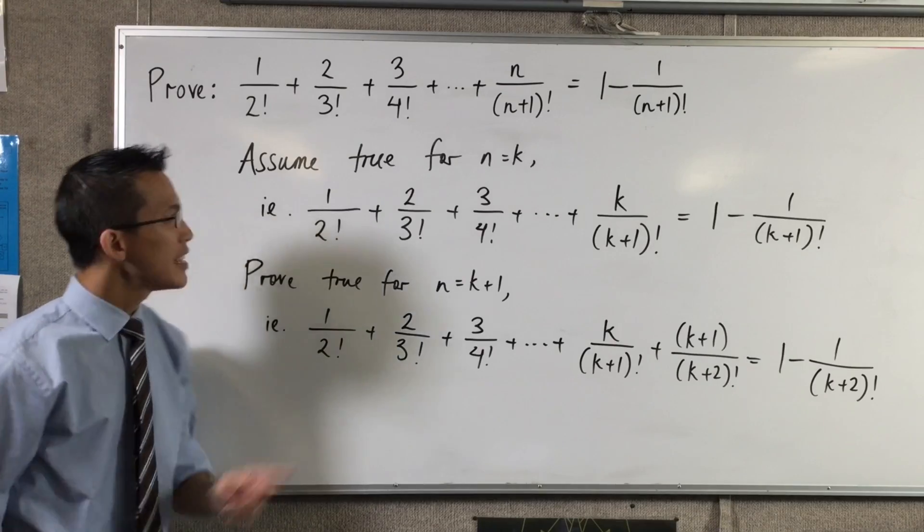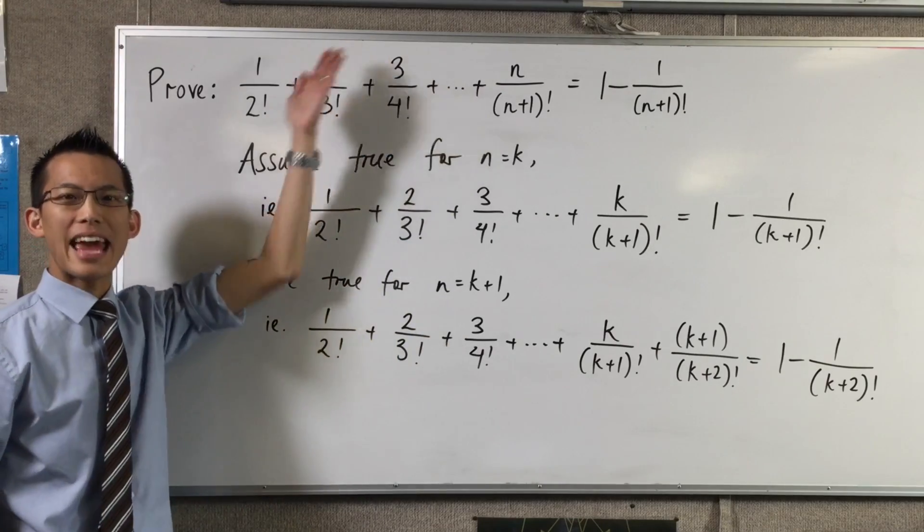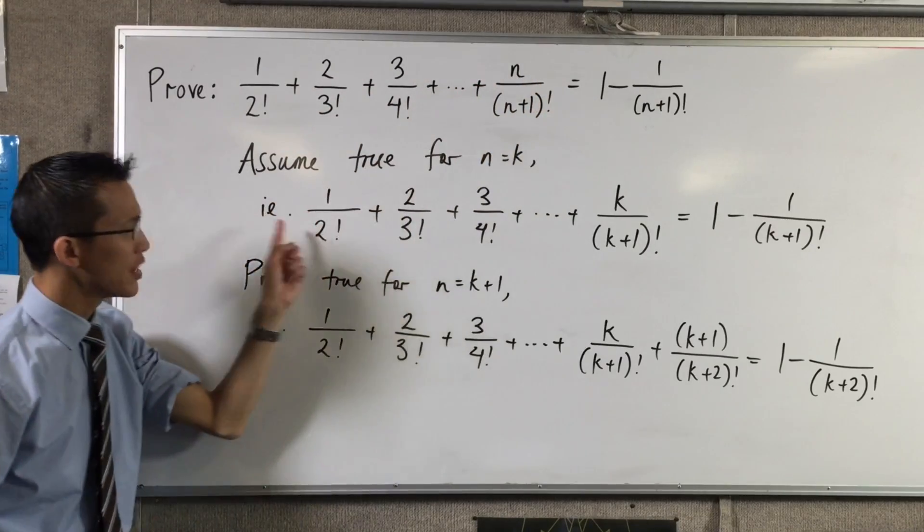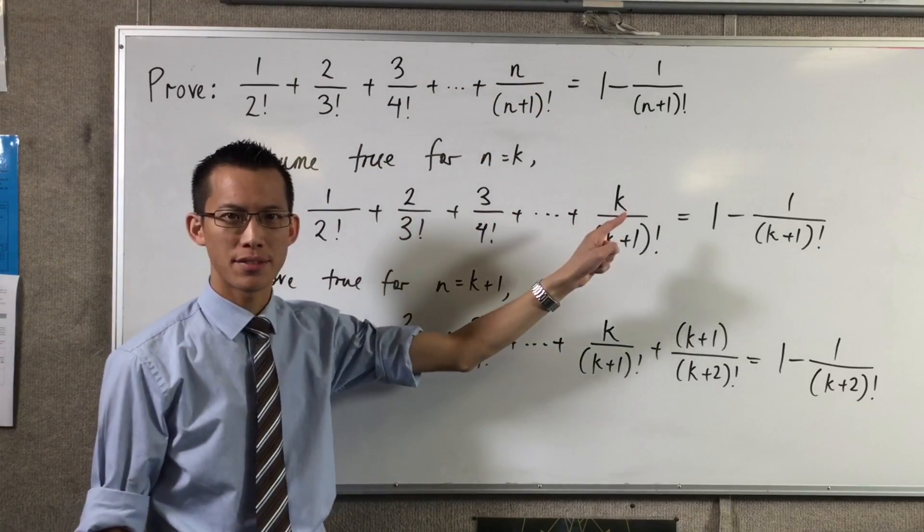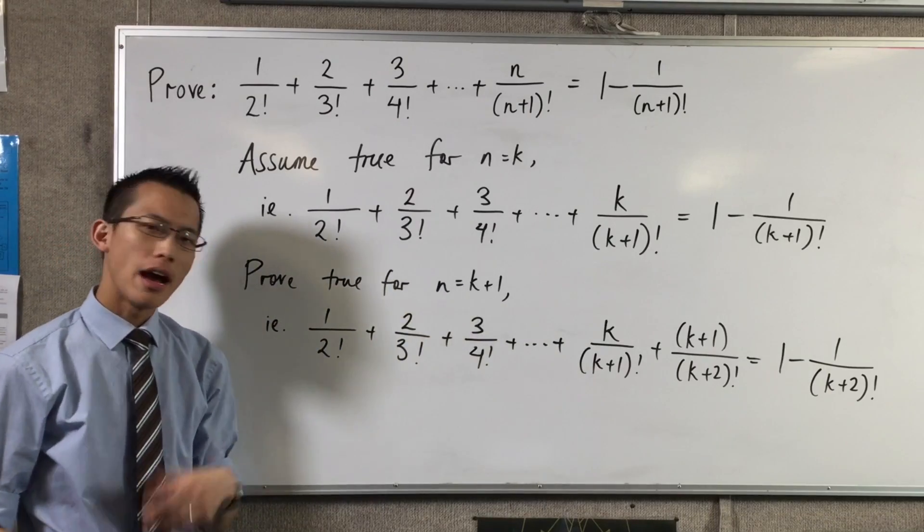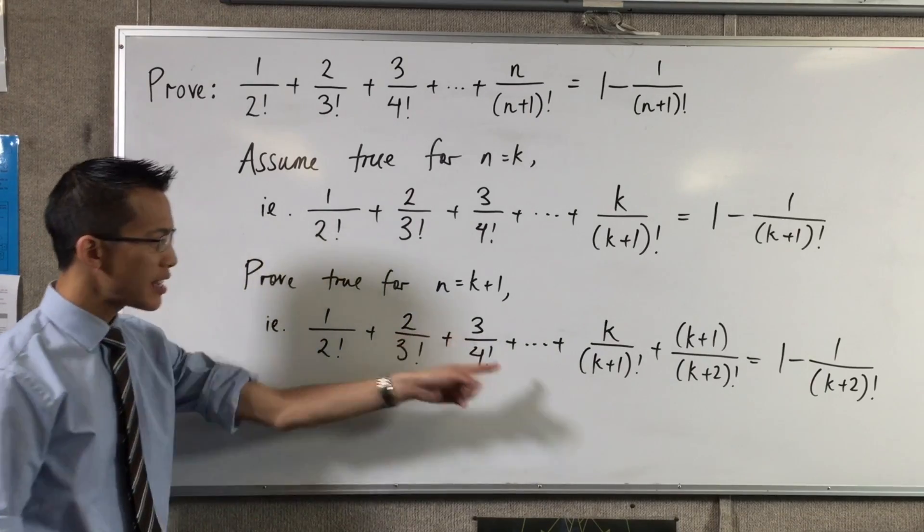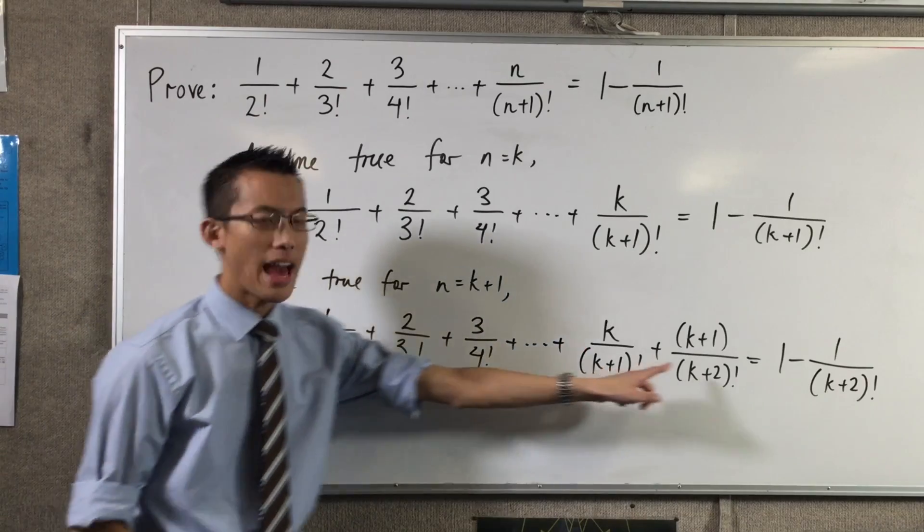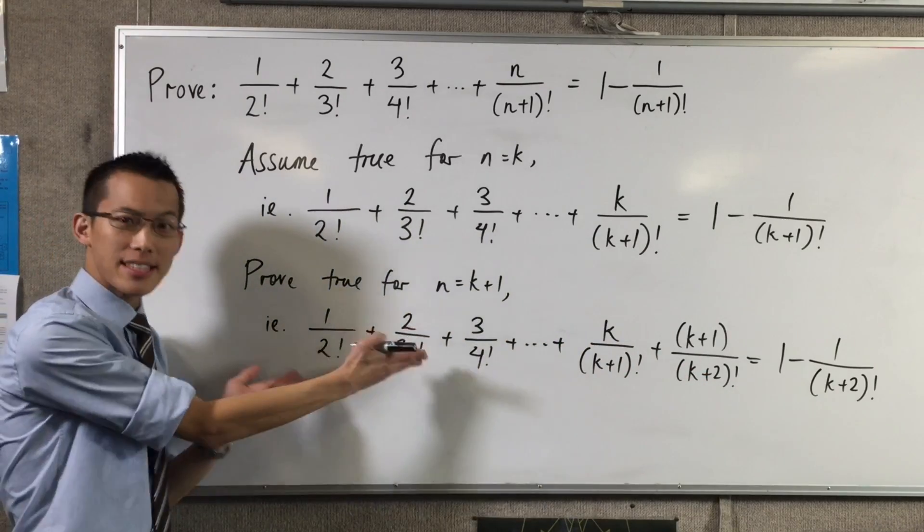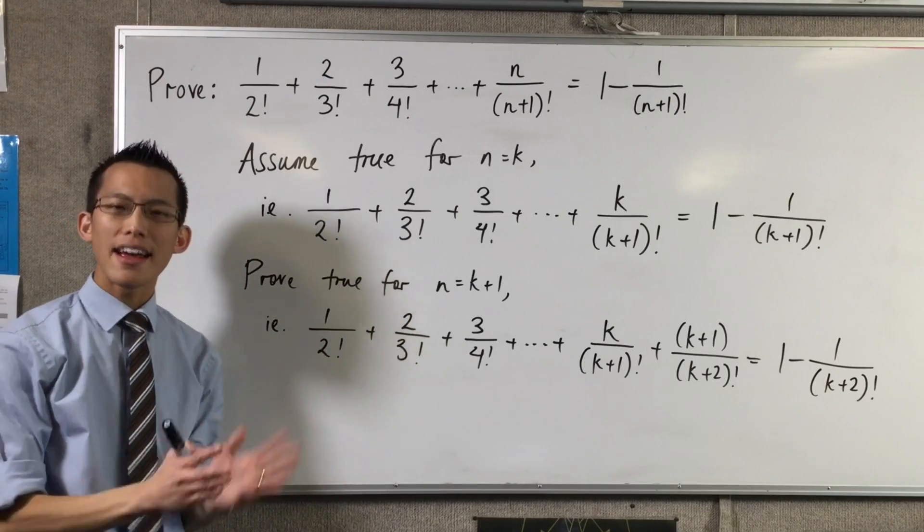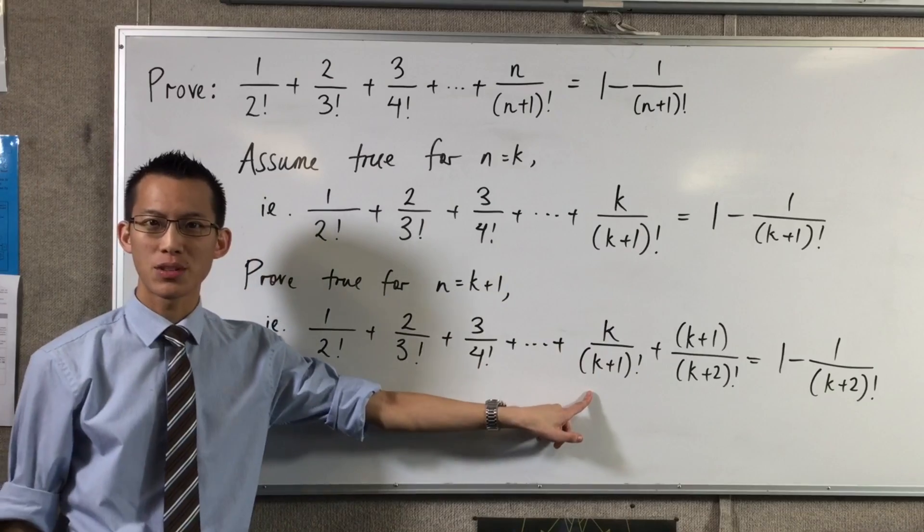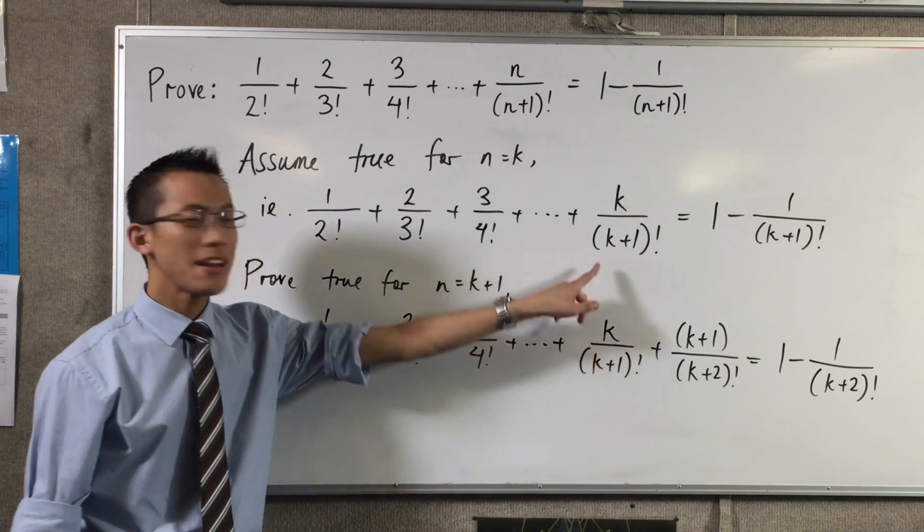Now, something worth noticing is that the original statement has n terms on the left, 1, 2, 3, 4, 5, 6, 7, 8 up to n. The assumption has k terms on the left, and the statement I'm now working with has k plus 1 statements on the left. I can't write all of them out, but you can see I've included the second last and the last terms, because when I do that, you can see that this line has something in it I can use.